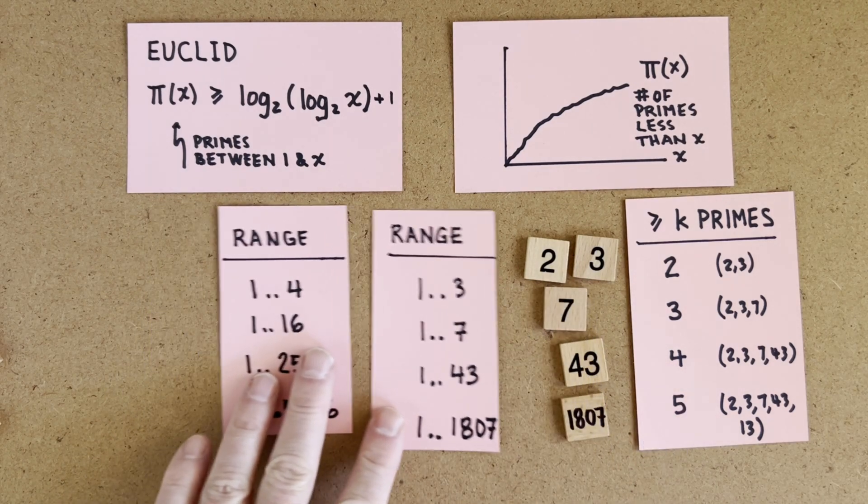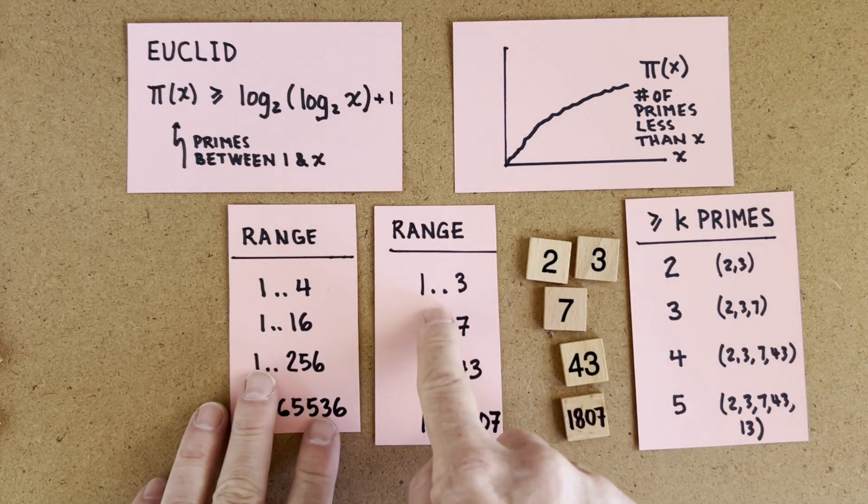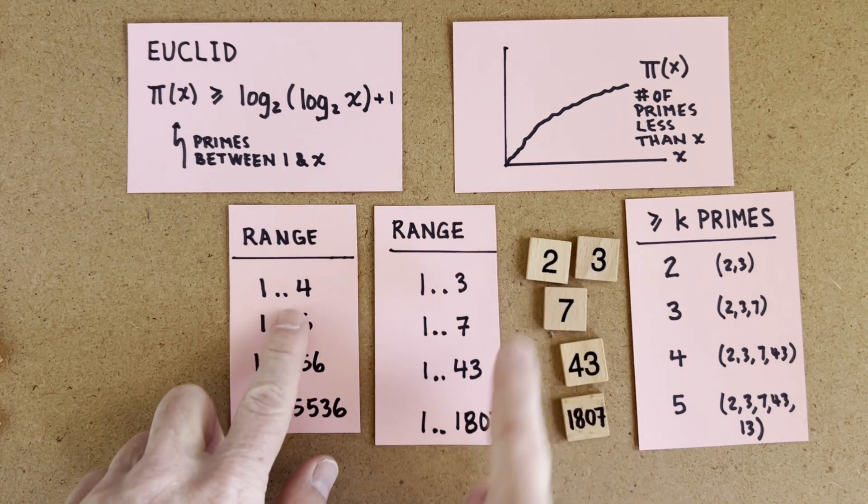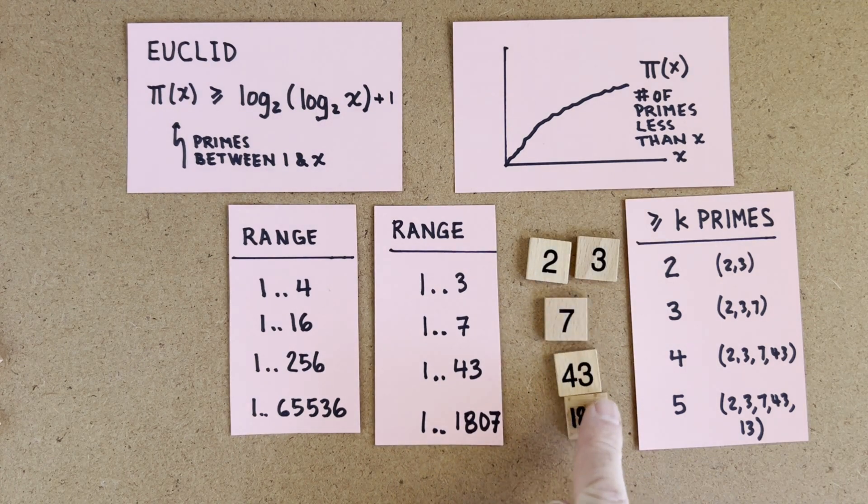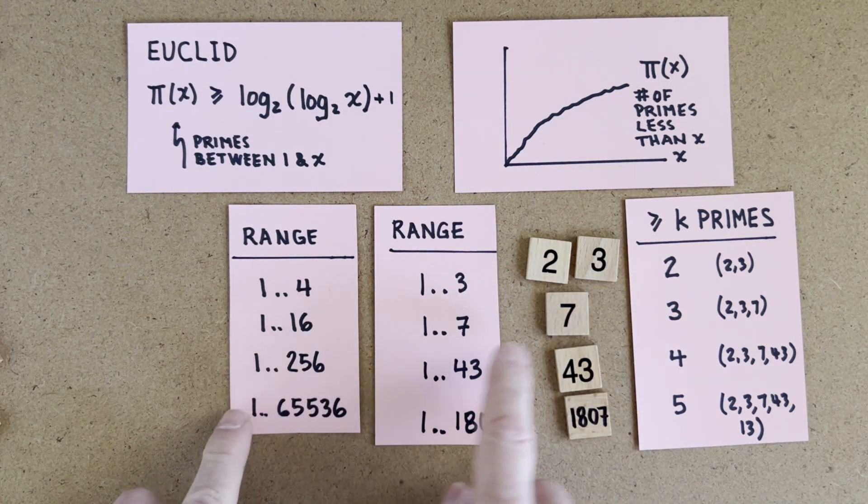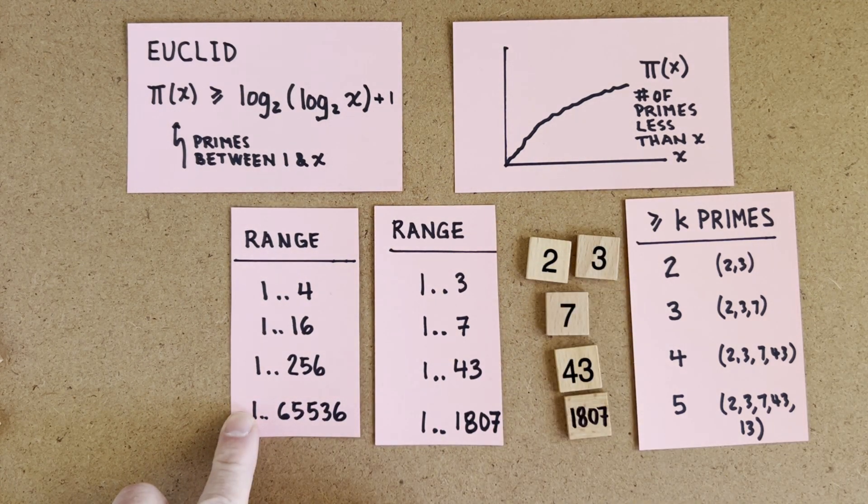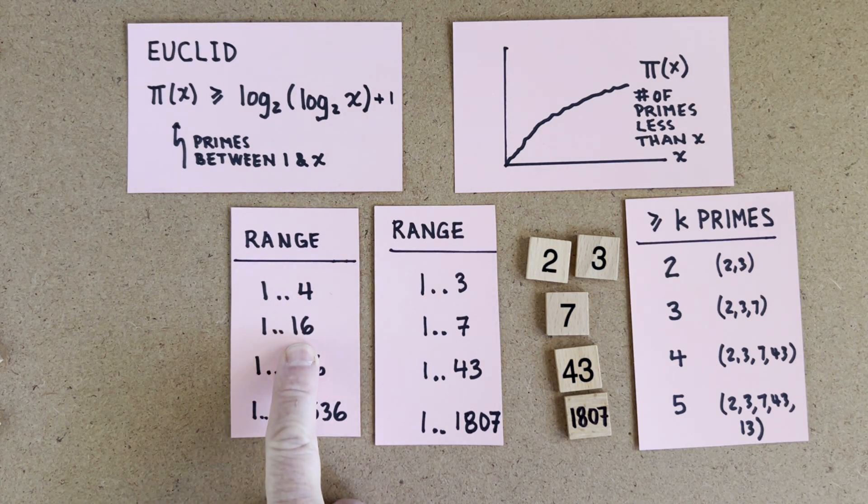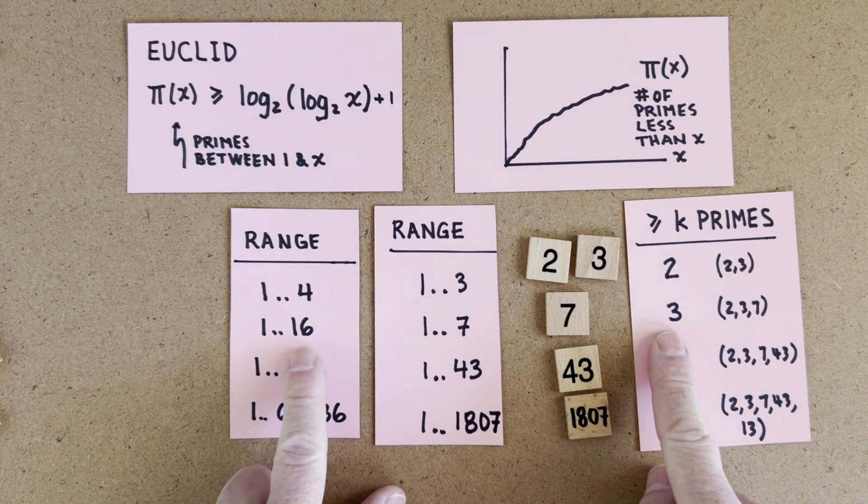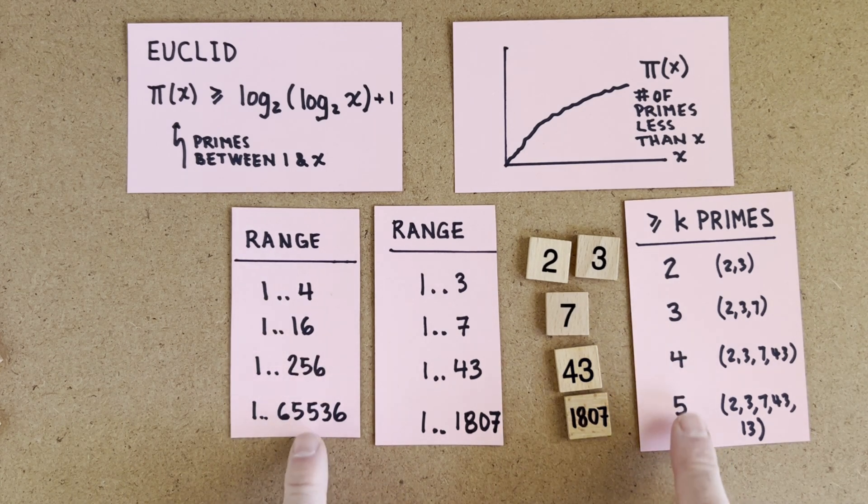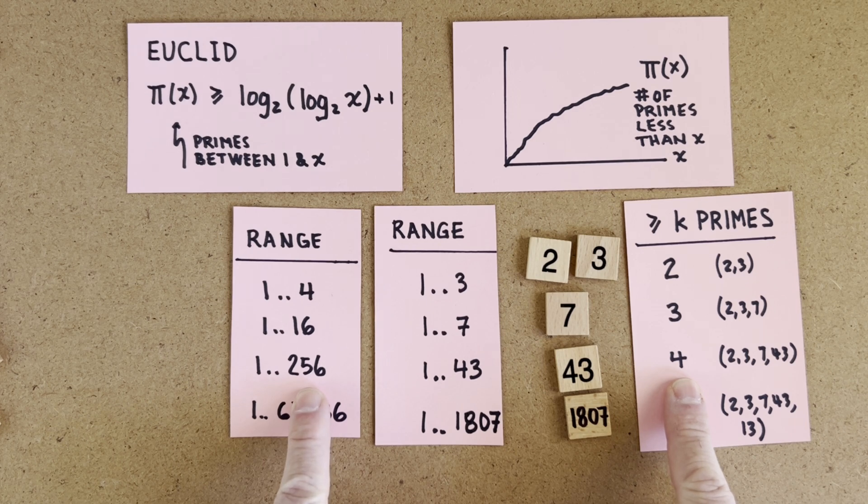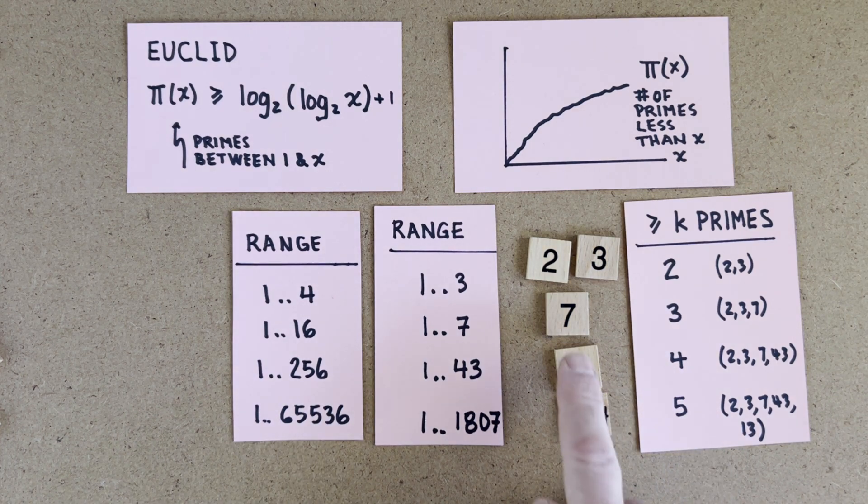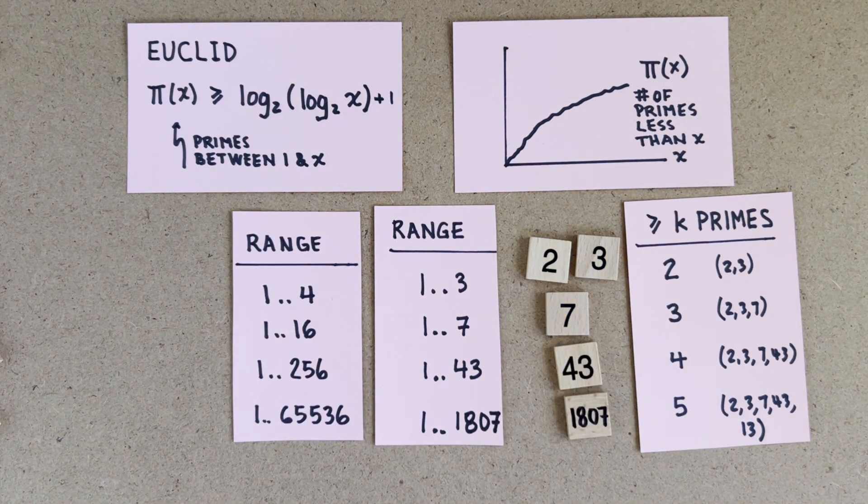So let's go back to the top. Instead of saying that these 2 primes are in the range of 1 to 3, it's also true that they're in the range of 1 to 4. And when we multiply them together to get 7, we're multiplying 2 numbers less than or equal to 4, so it's true that these 3 primes are now in the range 1 to 16. And multiplying 2 times 3 times 7 is at most multiplying 4 times 4 times 16, or 256. So even though the next prime is only 43, we can safely say it's in the range 1 to 256.